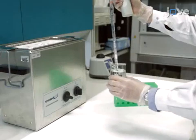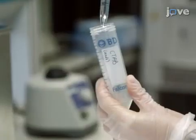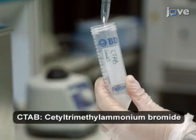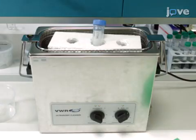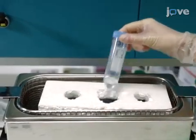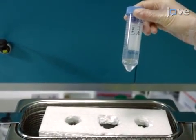To begin preparation of the gold seeds, first dissolve 364.4 milligrams of CTAB in 5 milliliters of water at 40 degrees Celsius using ultrasonication. Remove the sample from the sonicator once the solution becomes clear and allow it to cool to room temperature before proceeding.